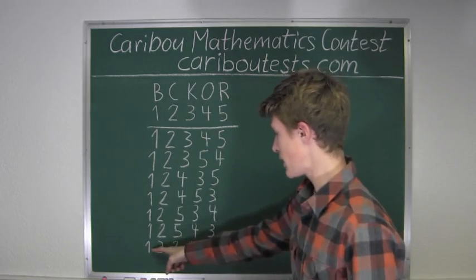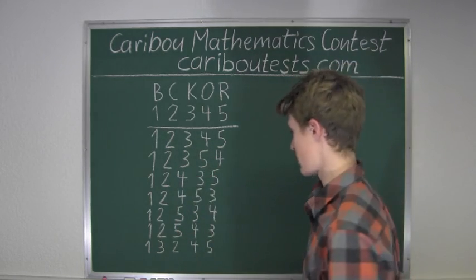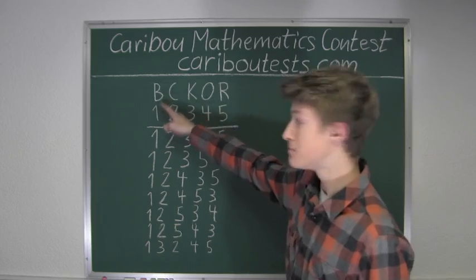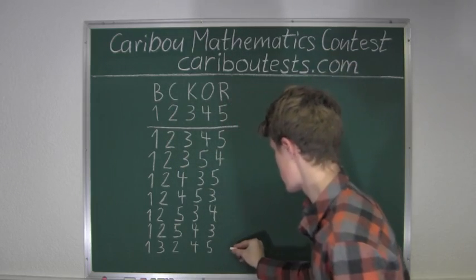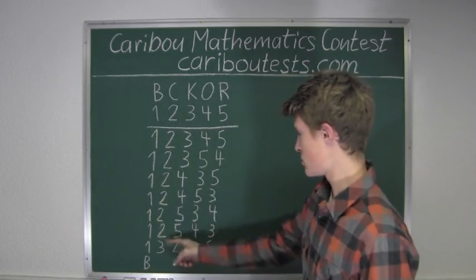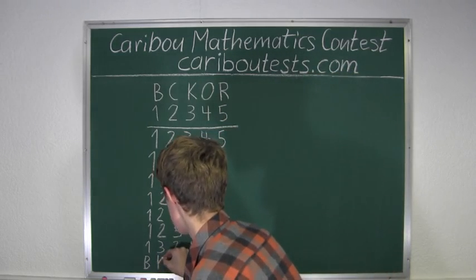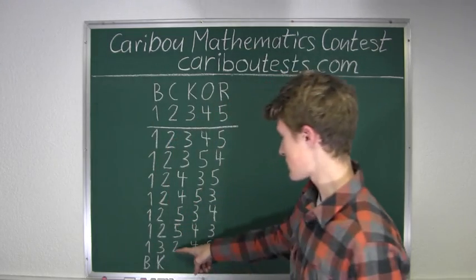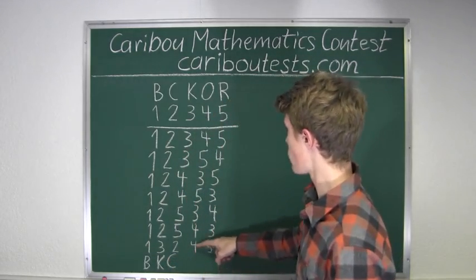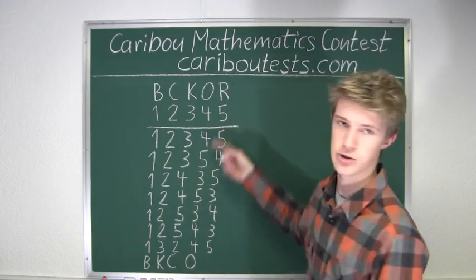All right, so now we know that 1, 3, 2, 4, 5 is the seventh word just written numerically. Okay, so we have 1 being the first digit, and we know that that is B. And now we will just write that under the next digit is 3, and 3 we know is K. The next digit is 2, so that's C. Next digit is 4, which we know is O. And the next digit is 5, which is R.